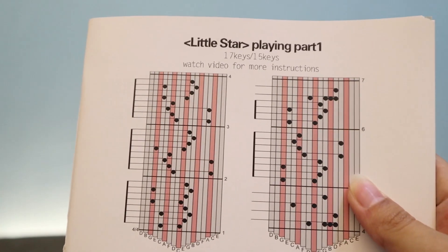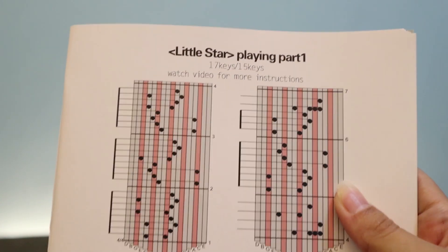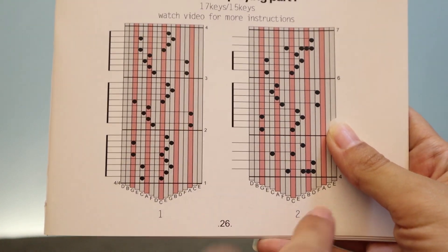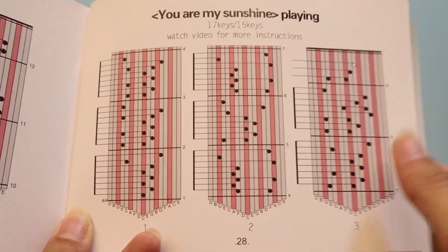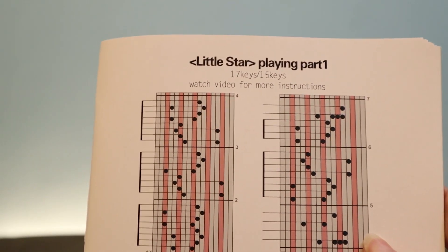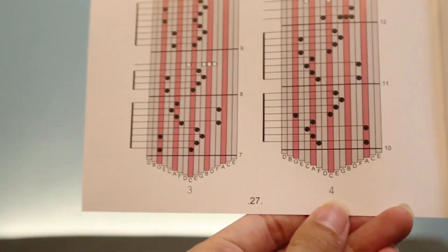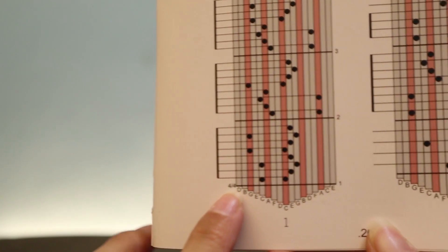This is what a tablature looks like. You can see at the bottom there are numbers so that you know where to start, and it also shows you how many parts it has. For this song we have four parts.